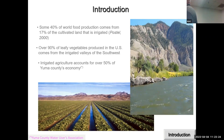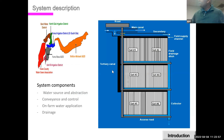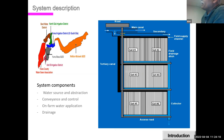Irrigation is a critical input to the agricultural systems of many regions of the world. Many countries would find it very hard to meet food and fiber demand without it. Locally in the southwestern U.S., irrigated agriculture accounts for a significant fraction of the local economy. An irrigation system can be conceived as an assembly of four subsystems: water source and abstraction, conveyance and control, on-farm water application, and drainage.